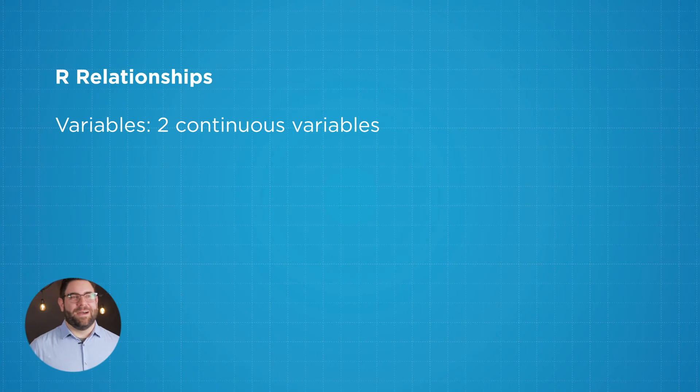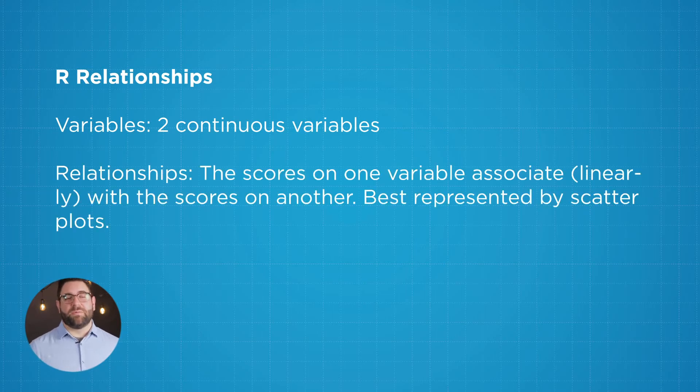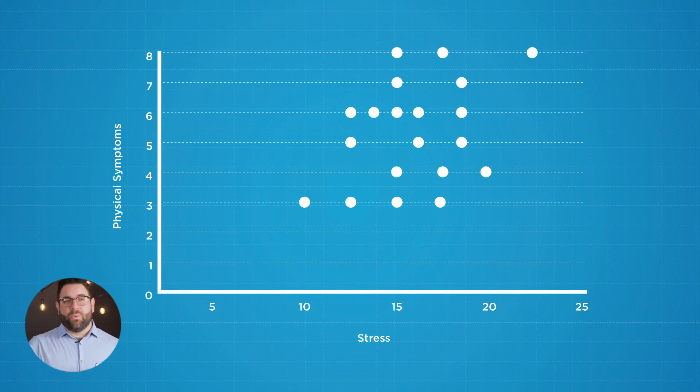So now we're going to talk about R relationships. When you think about an R relationship, what I want you to remember is that we have two continuous variables. In other words, two numbered variables. We're going to take those variables and compare them to one another. So as you can see from the graph here, we have stress and physical symptoms. So the more stressed a person tends to be, we can see that their physical symptoms actually increase.